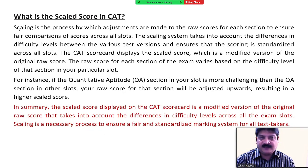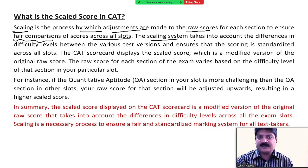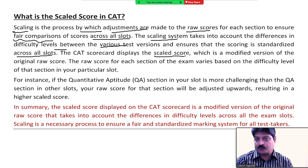यह तो गलत बात होगी कि आपका paper easy आया और आपको 45 marks मिले, और आपका friend जो intelligent था उसके सिर्फ 42 marks आए क्योंकि paper difficult था। तो ऐसा नहीं है — इसके लिए scaled score होता है। Scaling is the process by which adjustments are made to the raw score for each section to ensure fair comparison across all slots. The scaling system takes into account the differences in difficulty levels between various test versions.